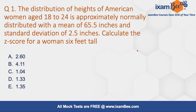Let's see question number one. The distribution of height of American women aged 18 to 24 is approximately normally distributed with a mean of 65.5 inches and a standard deviation of 2.5 inches. We have to calculate the z-score for a woman who is 6 feet tall. Let's see how to solve this question.